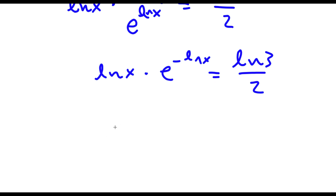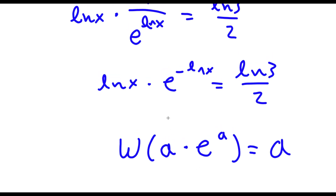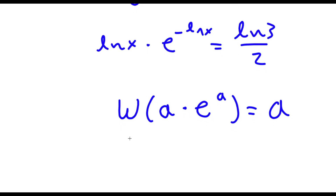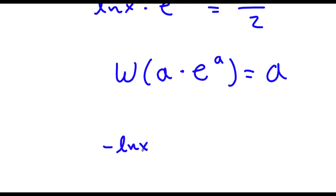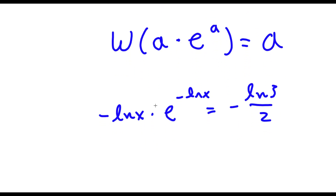Now, an important function for logarithms is known as the W Lambert function. Taking the W Lambert function of something in the form a times e to the power of a will give you simply a. So in this case, we have a = ln x and e to the power of negative ln x. To use this property, these two need to be the same. So I'm going to multiply both sides by negative 1. So now I have negative ln x times e to the power of negative ln x is equal to negative ln 3 over 2. And now, as you can see, both a's are the same.